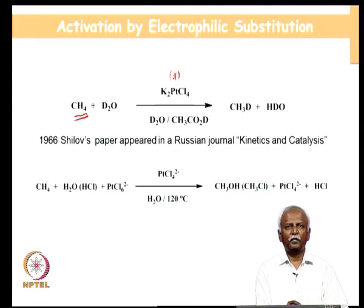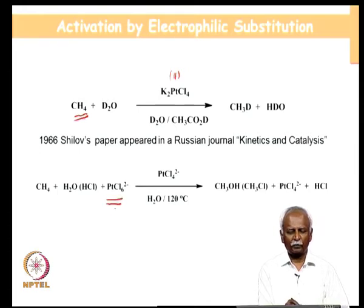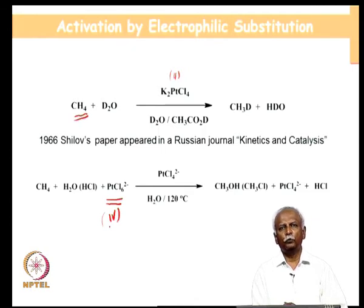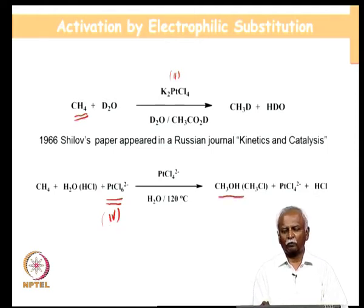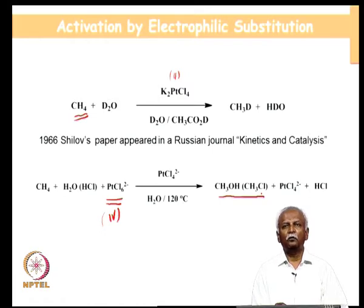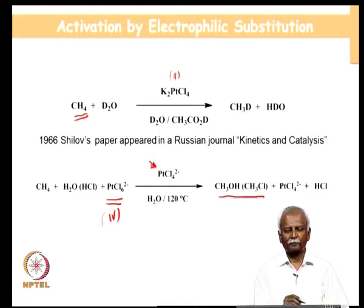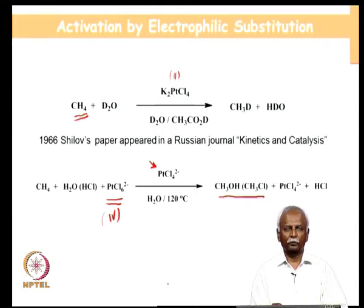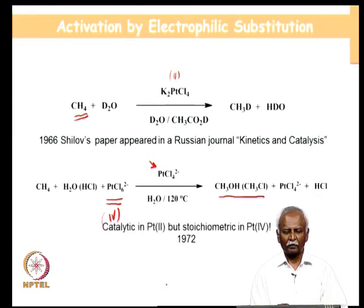A few years later, Shilov himself published a second most significant paper, in which he clearly showed that a platinum 4 species could be used in a stoichiometric fashion to activate methane to give either methanol or methyl chloride depending on the concentration of the chloride ion in the medium. This reaction, although not extremely useful because you have to use a stoichiometric amount of platinum 4 (platinum 2 is only a catalyst), paves the way for understanding electrophilic substitution. This was published only in 1972, about 6 years after the 1966 paper.